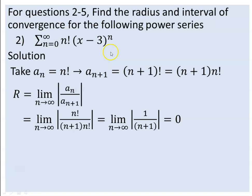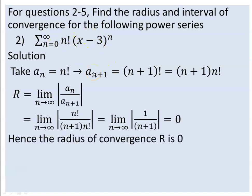So the only value that can make this series convergent is 3 — the center. Because R is 0, the only number that can make this power series convergent is 3.